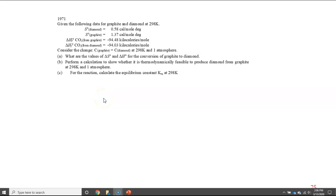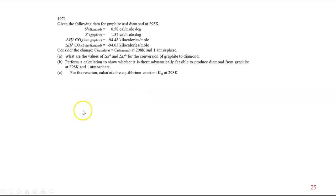We have here a released free response question from AP Chemistry. This is an energy question from 1971. Given the following data for graphite and diamond at 298 Kelvin, we have entropy data and we have free energy table data.